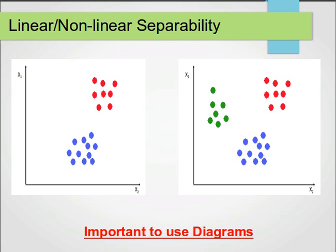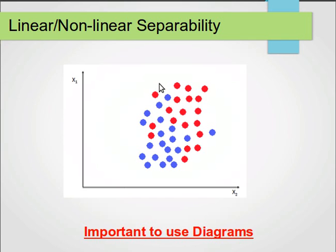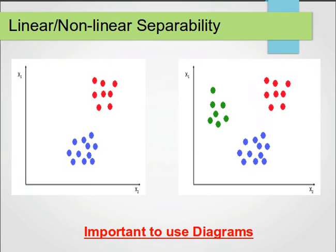To show you non-linearly separable data: here we can't actually draw a straight line to perfectly separate the two classes. But there are some tricks where we can transform the data from the dimensions we have now—two-dimensional data, let's say weight and height—we can add more dimensions so we can split that data.